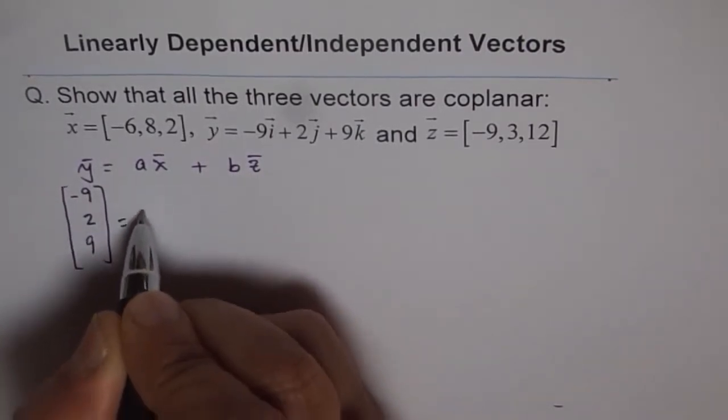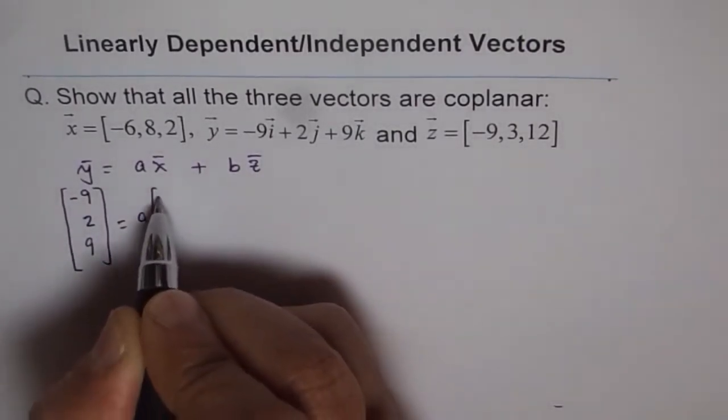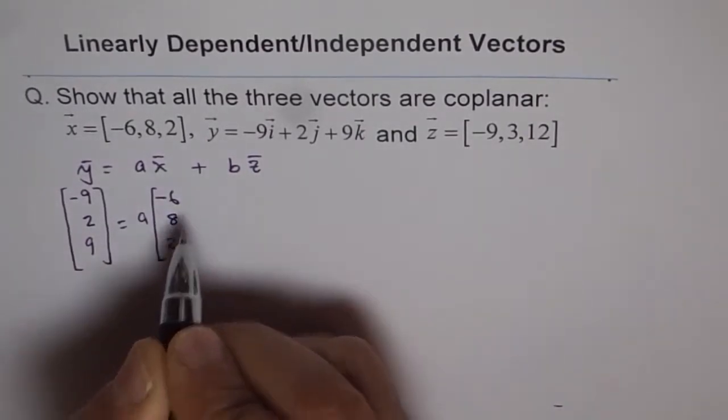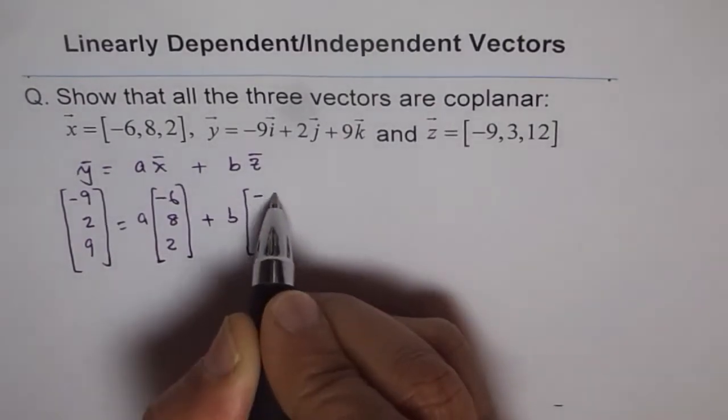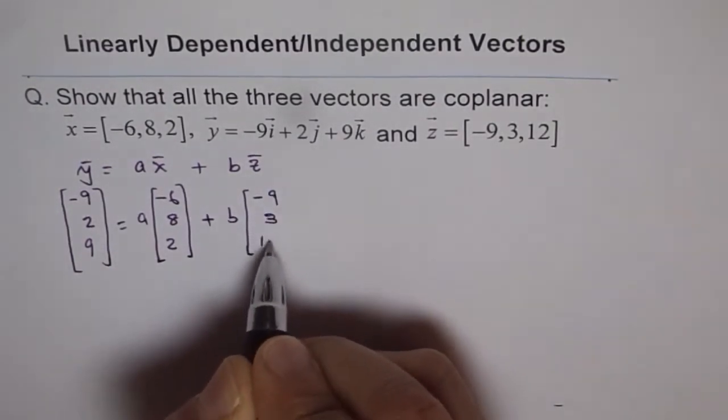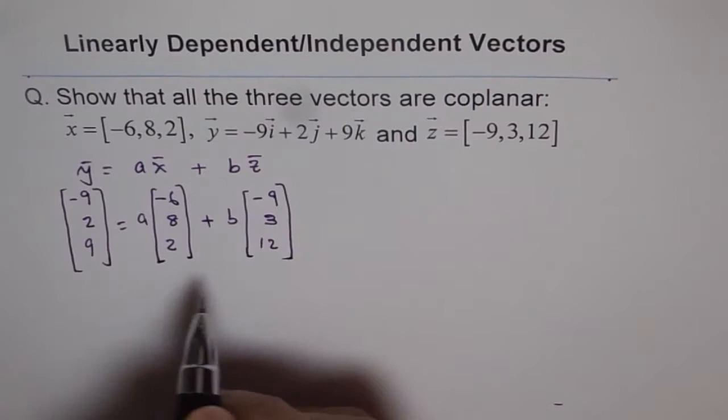And a times x is minus 6, 8, and 2. Plus b times z is minus 9, 3, and 12. So from here,